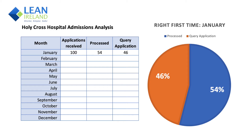A simple measurement of process effectiveness here would be right first time. If only 54 in every 100 can be processed effectively, then the right first time measurement is 54%. This measurement is very useful as a high level, rough measurement that gives you a good idea of your process performance.